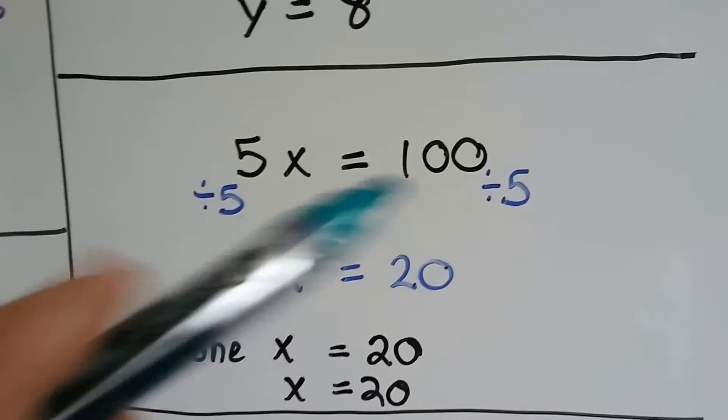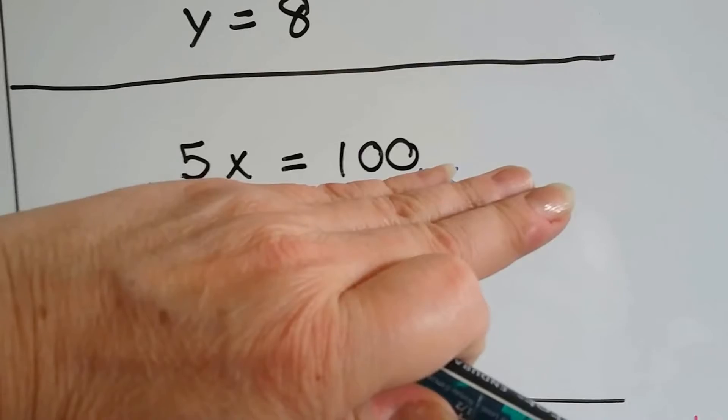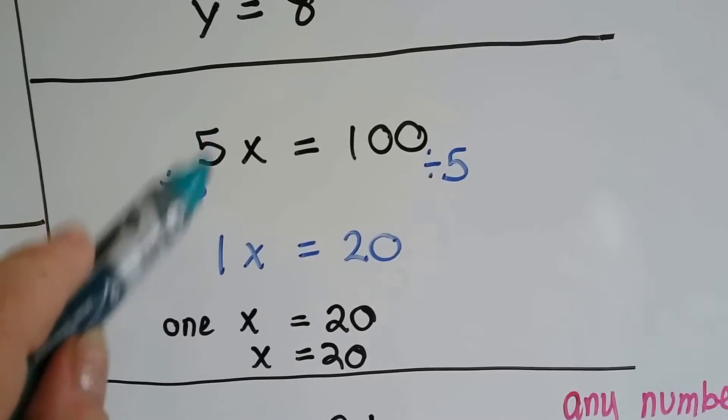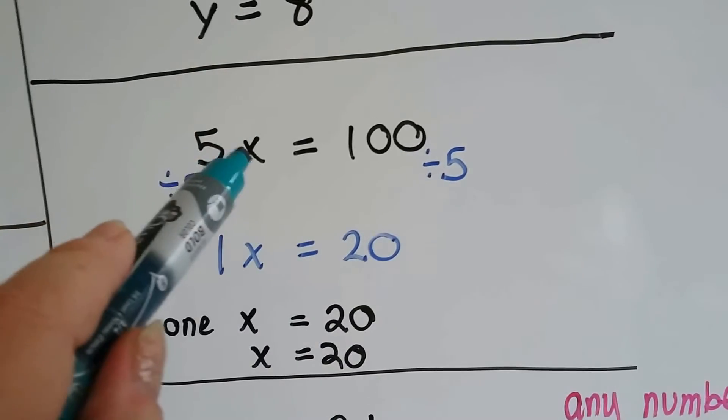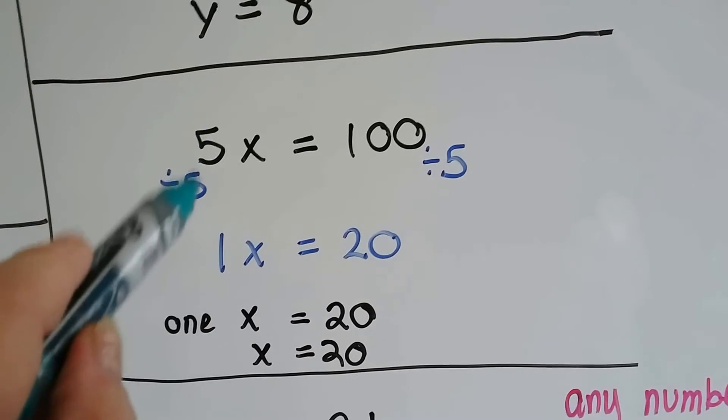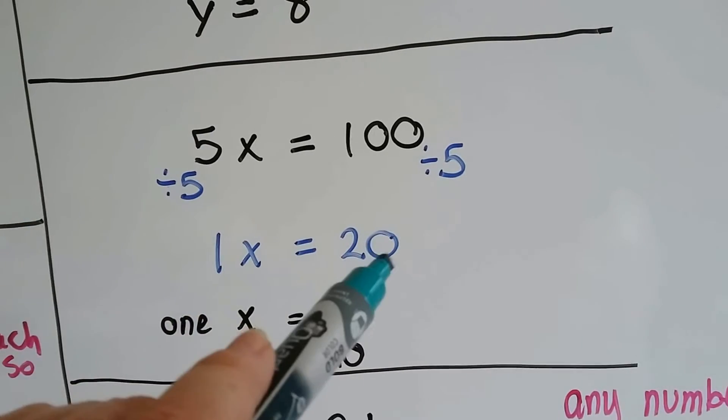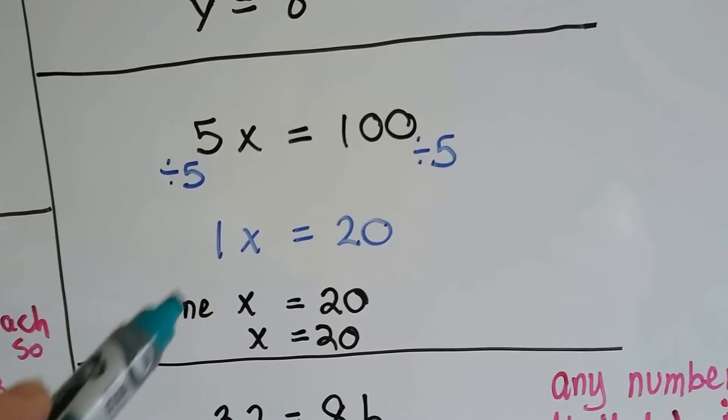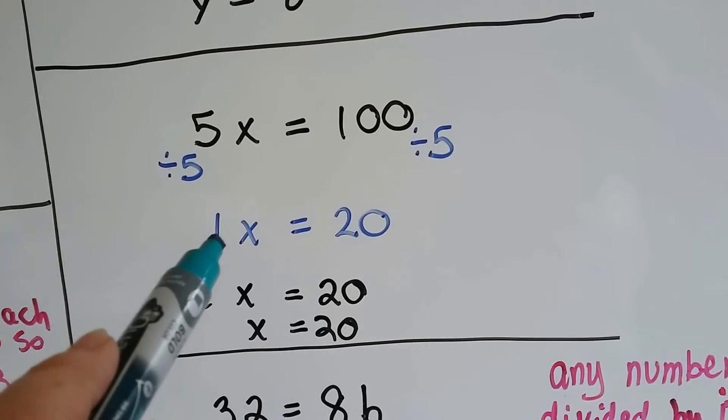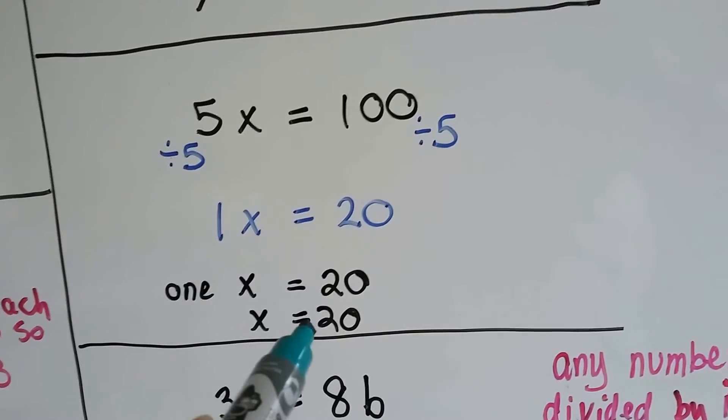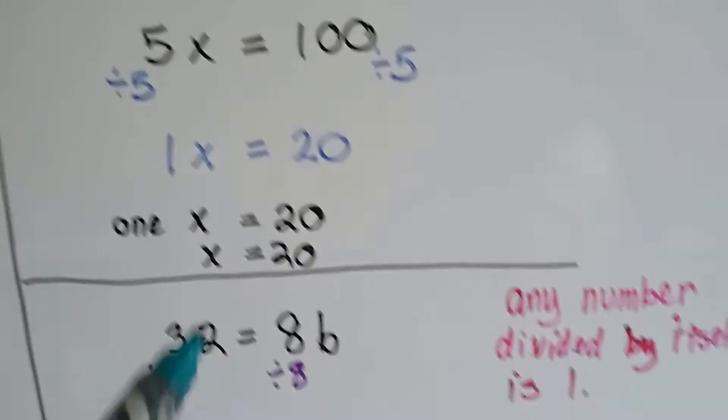Same with this one. We've got 5x equals 100. That means 5 times something equals 100. We divide each side by the 5 to make this x by itself. That'll get rid of the 5, and we end up with 1x equals 20. Well, that means 1x. So just an x equals 20. We don't need to write the 1.